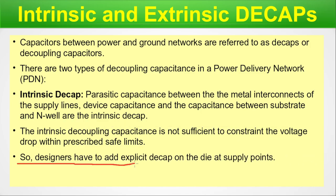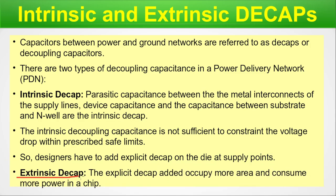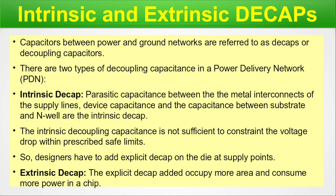The intrinsic decoupling capacitance is not efficient to constrain the voltage drop within the prescribed safe limits — the plus or minus 5% we discussed. So designers have to add explicit DCAPs on the die at supply points. This is where extrinsic DCAPs enter the picture. Extrinsic DCAPs are the explicit DCAPs added, which occupy more area and consume more power in a chip. As a designer you have to place these to minimize noise in the circuit.